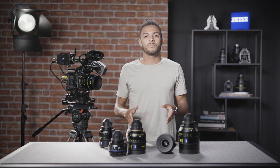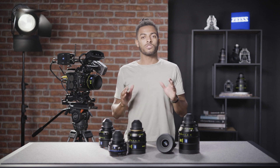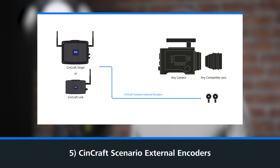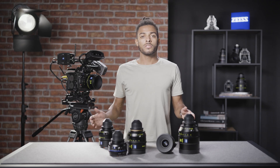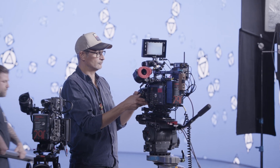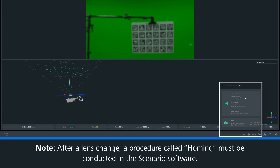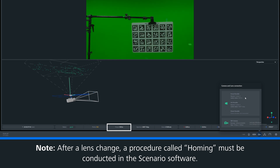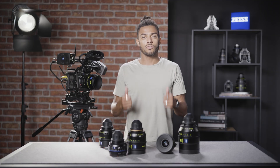The final option, when no lens control system is being used and lens data cannot be read from any other source, is the Syncraft Scenario external encoders. This is a pair of passive encoders designed to read zoom and focus information only, and they must be mounted onto the lens via either 15mm or 19mm rod mounts. Because the encoders are passive and simply detect movement of the lens barrel, it's important that any time a lens is changed a procedure called homing is conducted in the Scenario software — essentially the same as calibrating the motors on a lens control system. We'll talk about how to do the homing procedure in another tutorial, but hopefully you now have a good understanding of the different options available to read lens data with your Scenario system. Thank you for watching, and we'll see you in the next one.